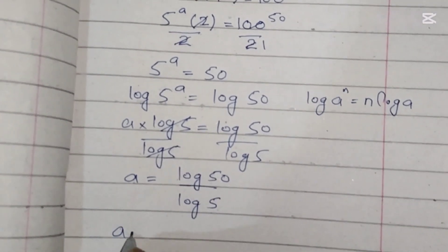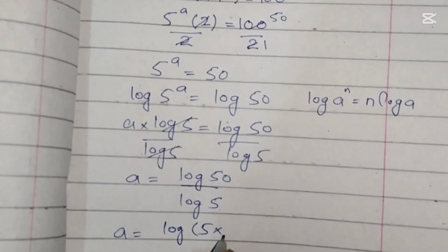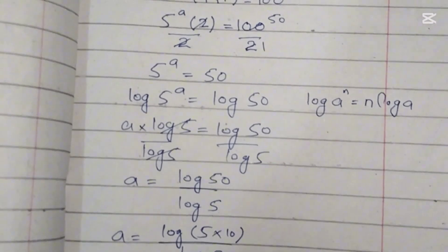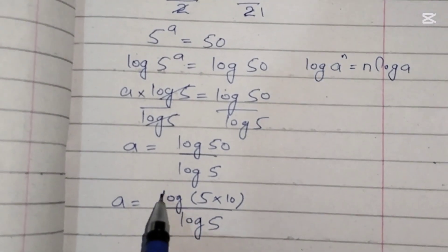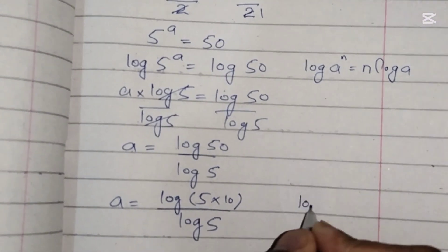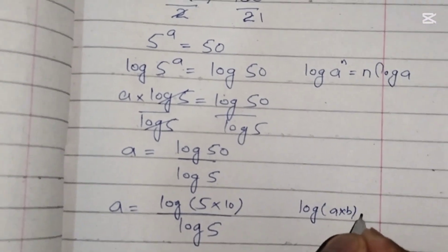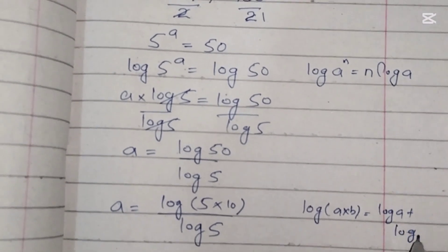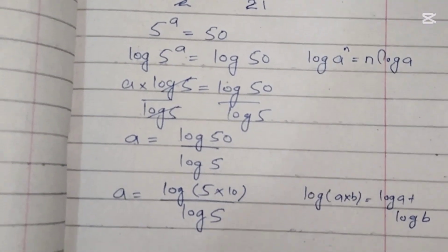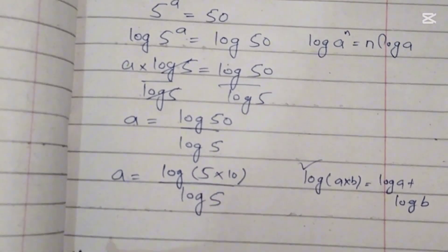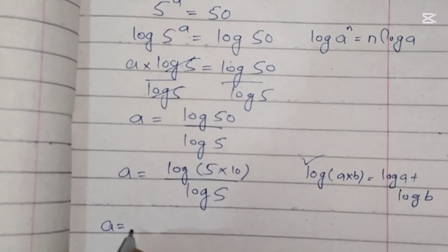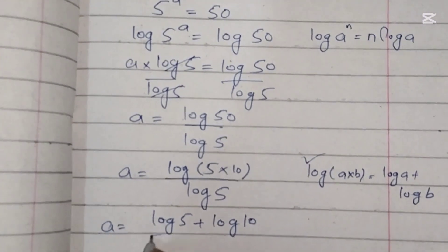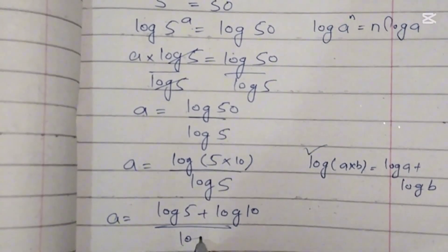Log of 5 cancels with log of 5, and we get a equals log of 50 over log of 5. Now we can write 50 as 5 times 10, so it is log of 5 times 10 over log of 5. For the numerator we will use the product rule of logarithm: log of a times b equals log of a plus log of b. So in the numerator it becomes a equals log of 5 plus log of 10 over log of 5.